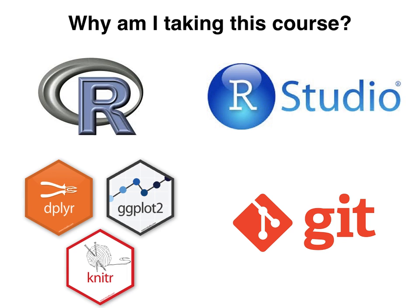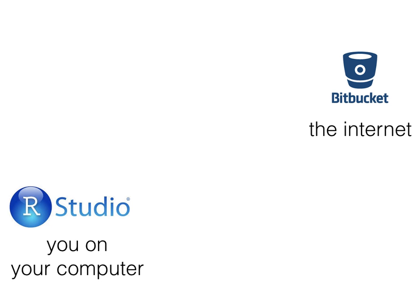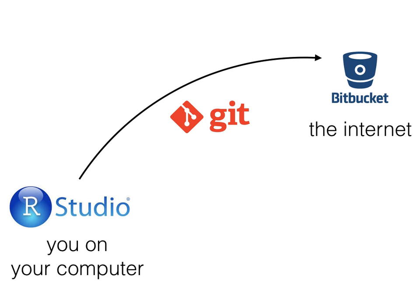Git also has the benefit of allowing you to share your code and data with people. Let's say you're on your computer coding in RStudio and you want to share your code with the world. You decide to upload it to Bitbucket, which is an online way to share code. The git protocol allows you to save your work, keep a record of what you've done, and then push that up to the internet. So git is really useful not simply for keeping this version control record, but also for sharing that code with other people.